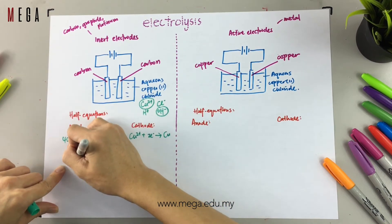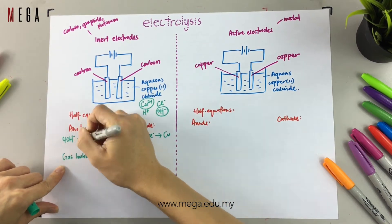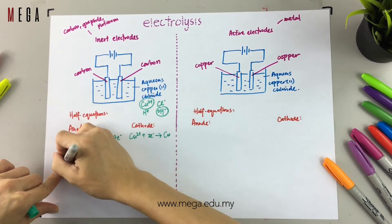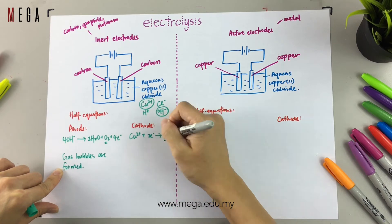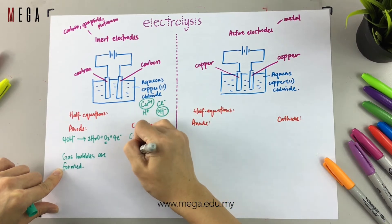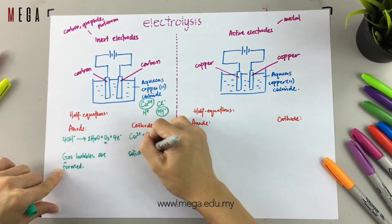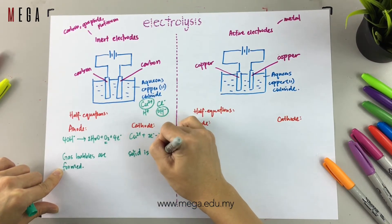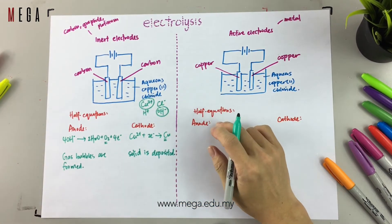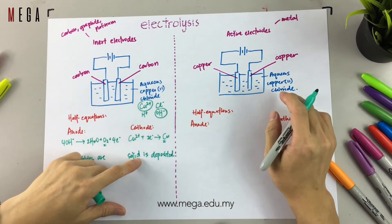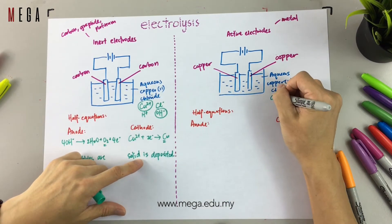For the observation at the anode, since oxygen gas is produced, the observation will be gas bubbles. At the cathode, solid is deposited because of the formation of copper atoms.